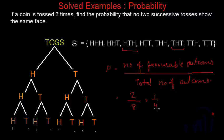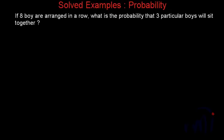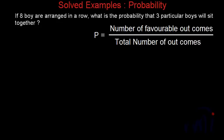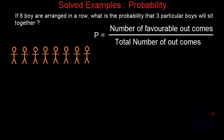So it was very simple. The only trick was to identify the favorable outcomes. Now we are going to take the second problem. The problem statement says: if eight boys are arranged in a row, what is the probability that three particular boys will sit together? Suppose we have eight boys who need to be arranged in a row, then the total number of ways these boys can be arranged is eight factorial.